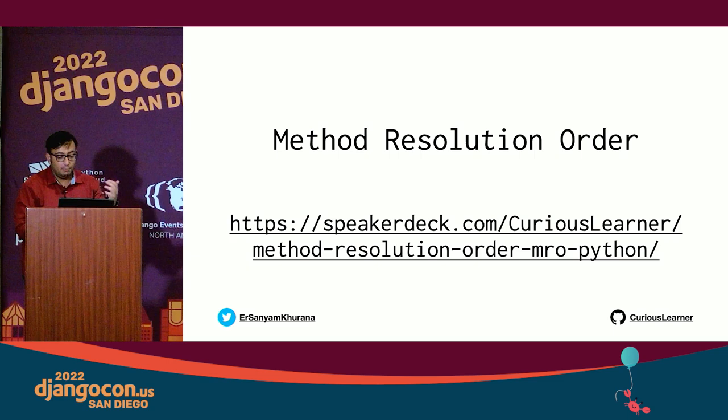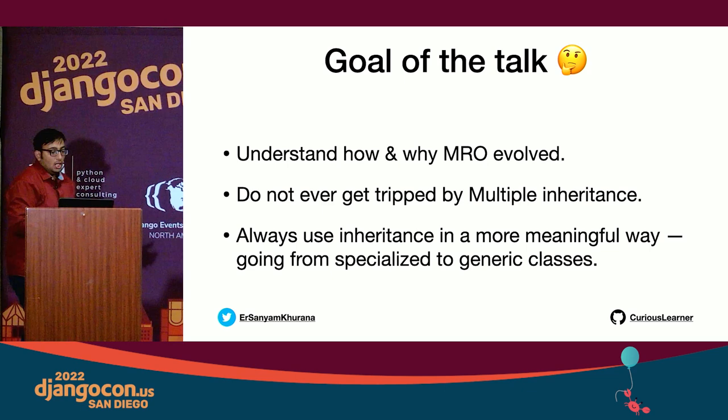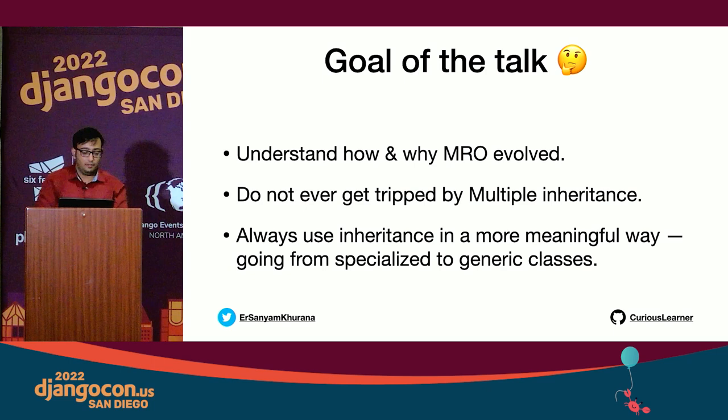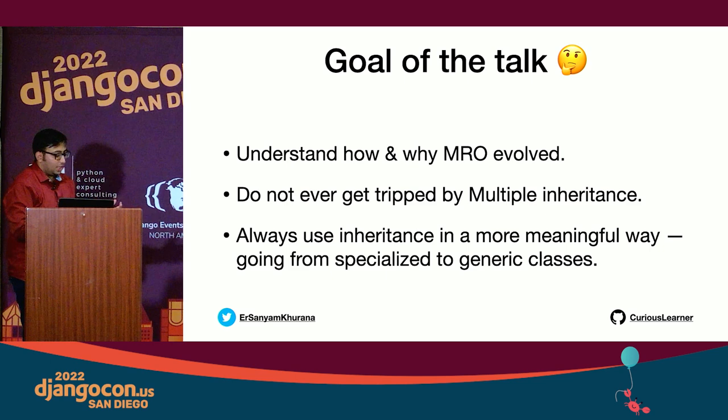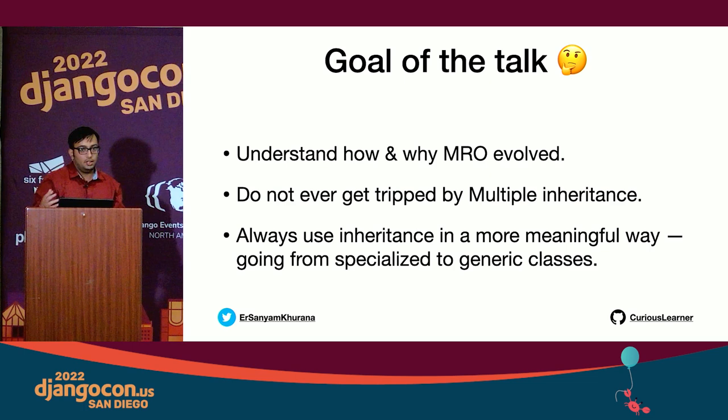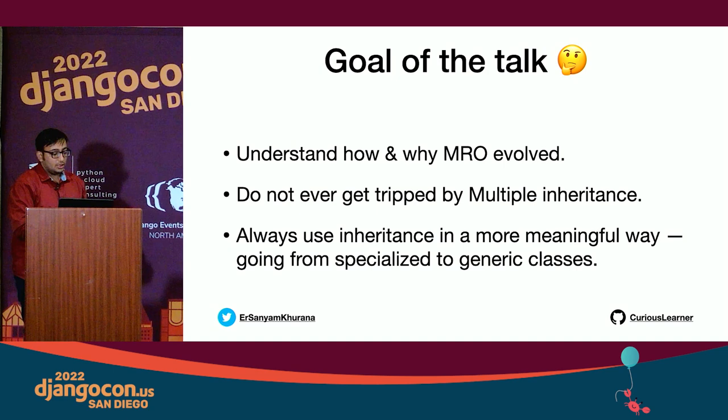The goal of this talk is to understand how and why MRO evolved the way it is now — to never get tripped up by multiple inheritance, and if you're using it in Python or Django, to use it in a more meaningful way, always going from specialized to more generic classes. This will also help you understand advice like inheriting mixins before concrete classes.